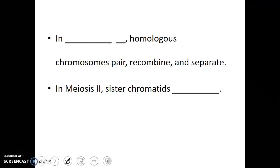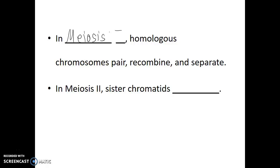Looking at what happens in these two divisions of meiosis: in meiosis 1, homologous chromosomes pair, recombine, and separate. As chromosomes condense during prophase 1, homologous chromosomes find their matching partner — that's the pairing. Recombining is when sections of homologous chromosomes actually exchange with each other. The key is that during anaphase 1, the pairs of chromosomes separate, and it's this separation that takes us from being a diploid cell to a haploid cell. In meiosis 2, it's the sister chromatids that separate — very similar to the events that occur during mitosis.